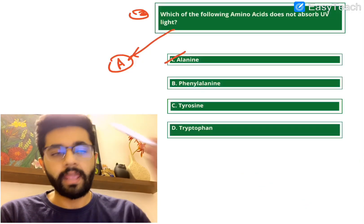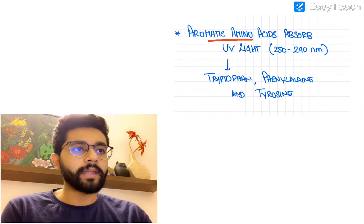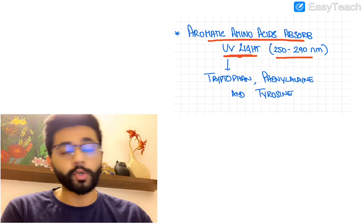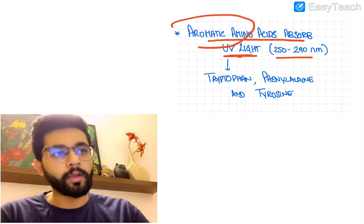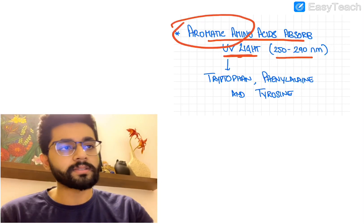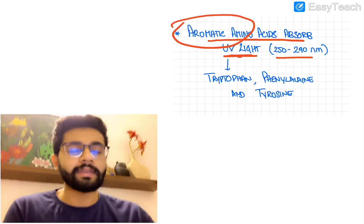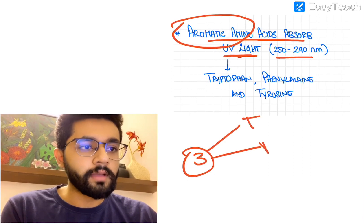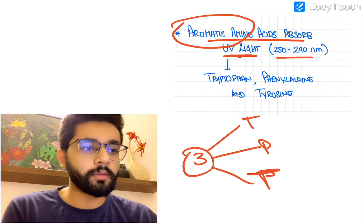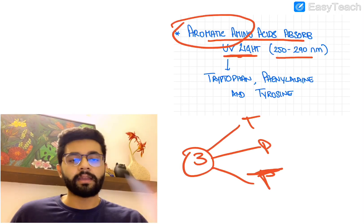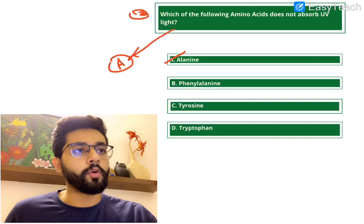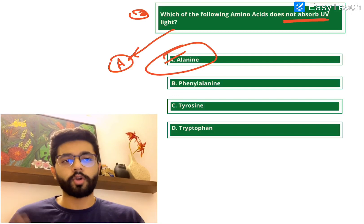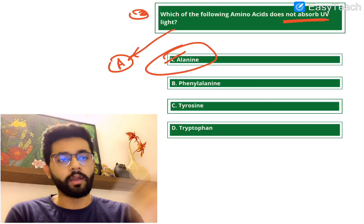For the UV light question, the answer is A — alanine. It is the aromatic amino acids that absorb UV light, in the spectrum of 250 to 290 nanometers. The three important aromatic amino acids are tryptophan, phenylalanine, and tyrosine — you can remember them as TPT. These absorb UV light due to their aromatic ring structure. Alanine is not aromatic and therefore does not absorb UV light.